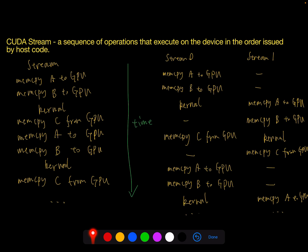That means those operations will be ordered in a queue. Once we add an operation to the queue, it doesn't mean the previous operation has already finished. In the worst case, what we see in the queue is: first copy a chunk of A to GPU, then copy B to the GPU, call the kernel function, then copy C back from GPU. If those operations have not been completed, we still continue to add operations to copy the second chunk of A to GPU and copy B to GPU. The full operations are stored in the queue of a single stream.